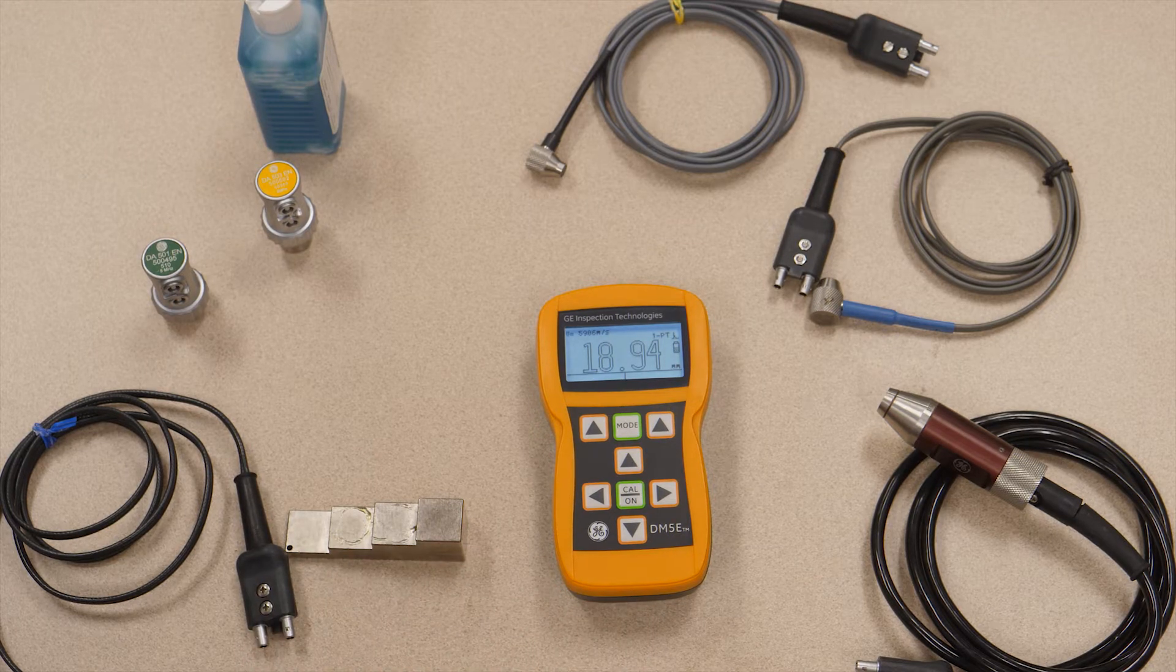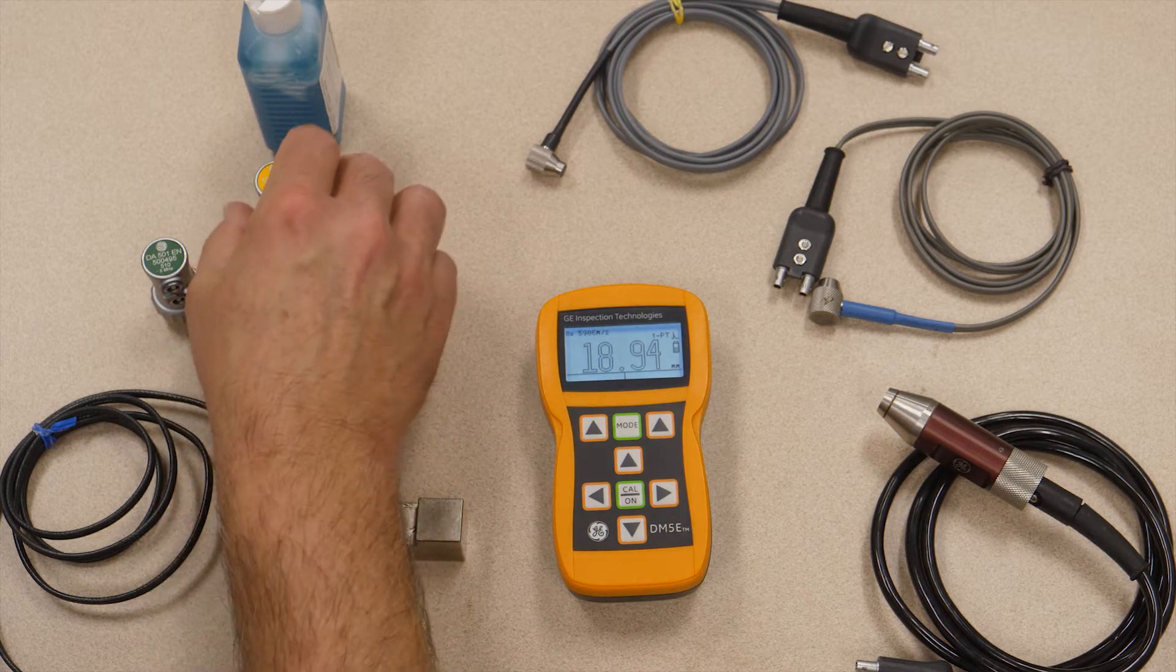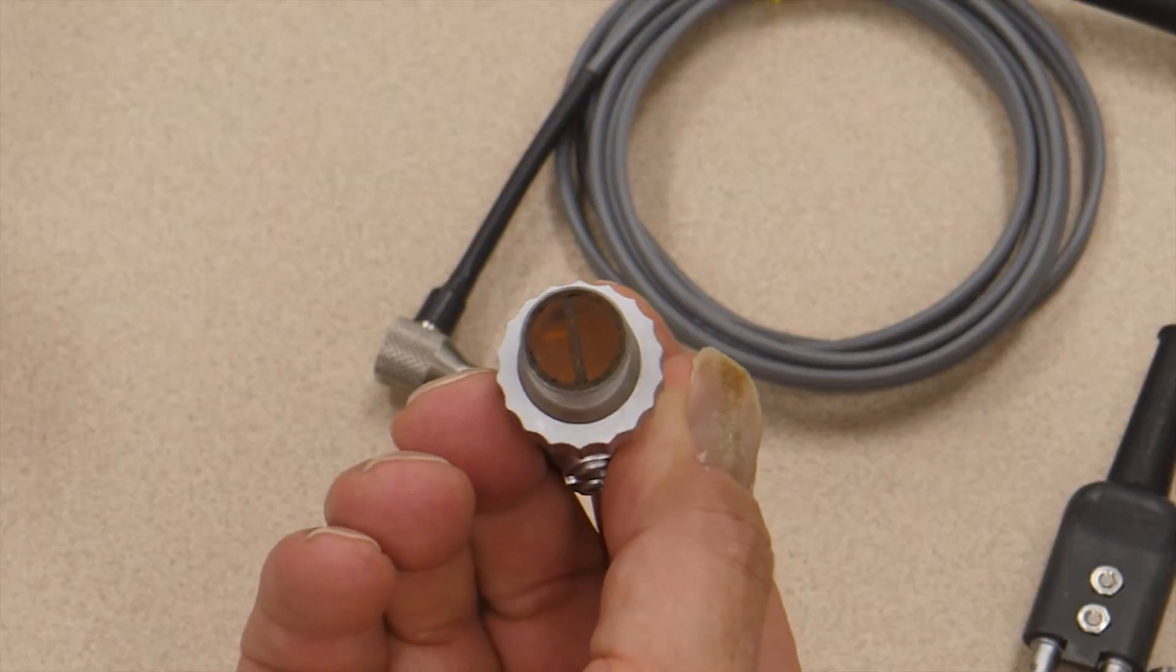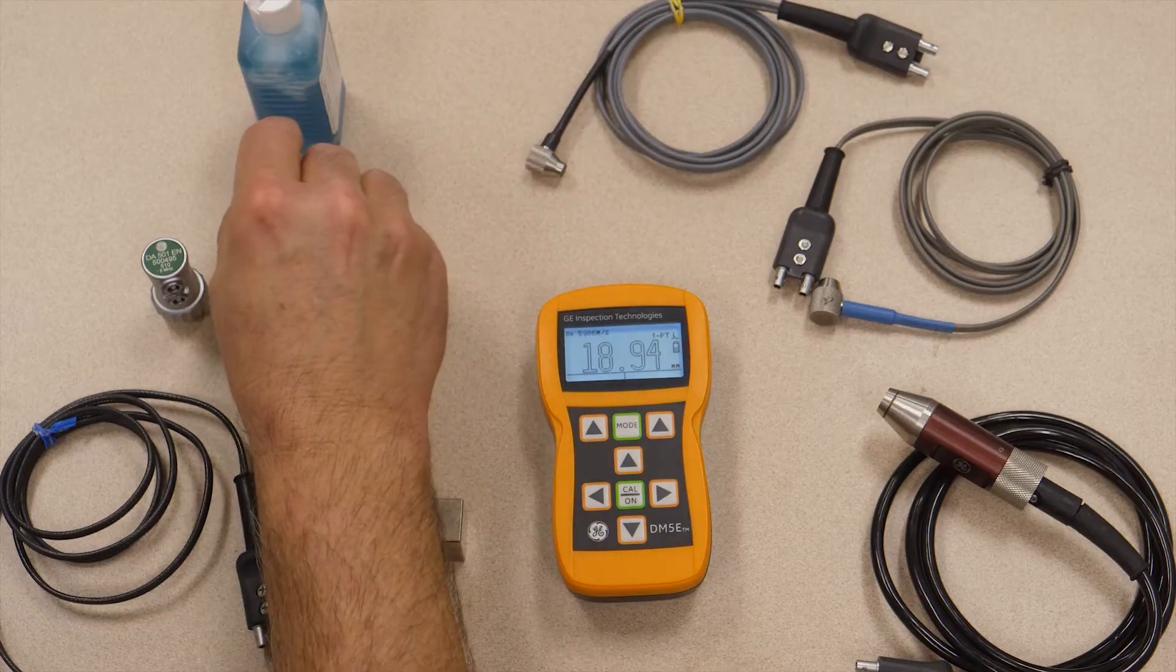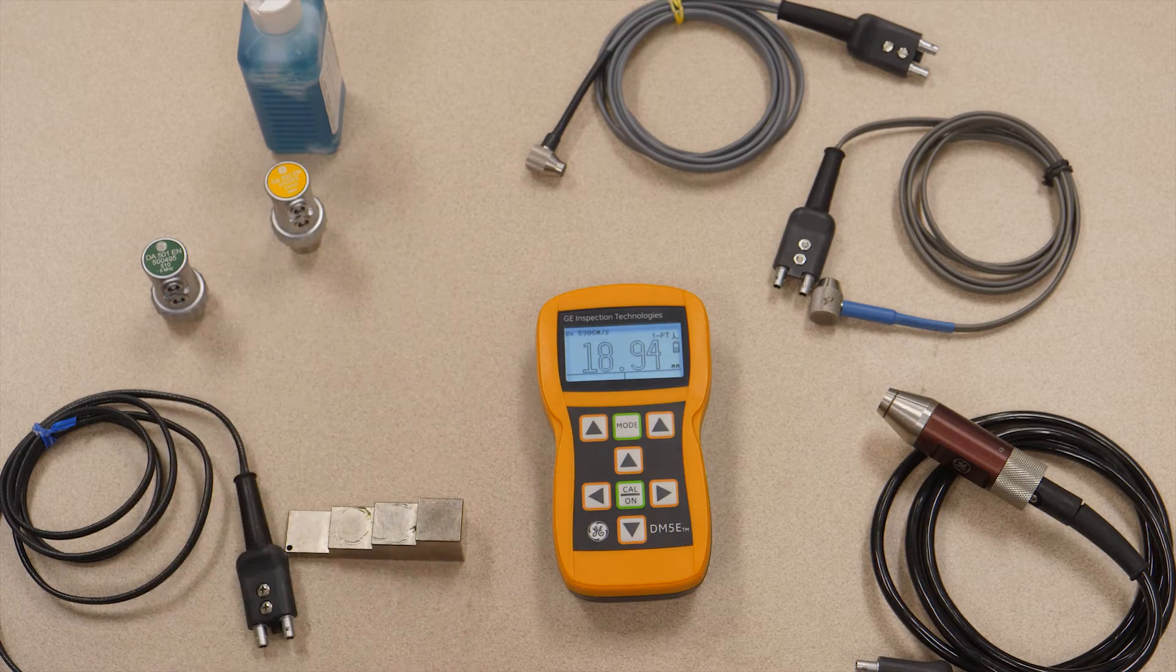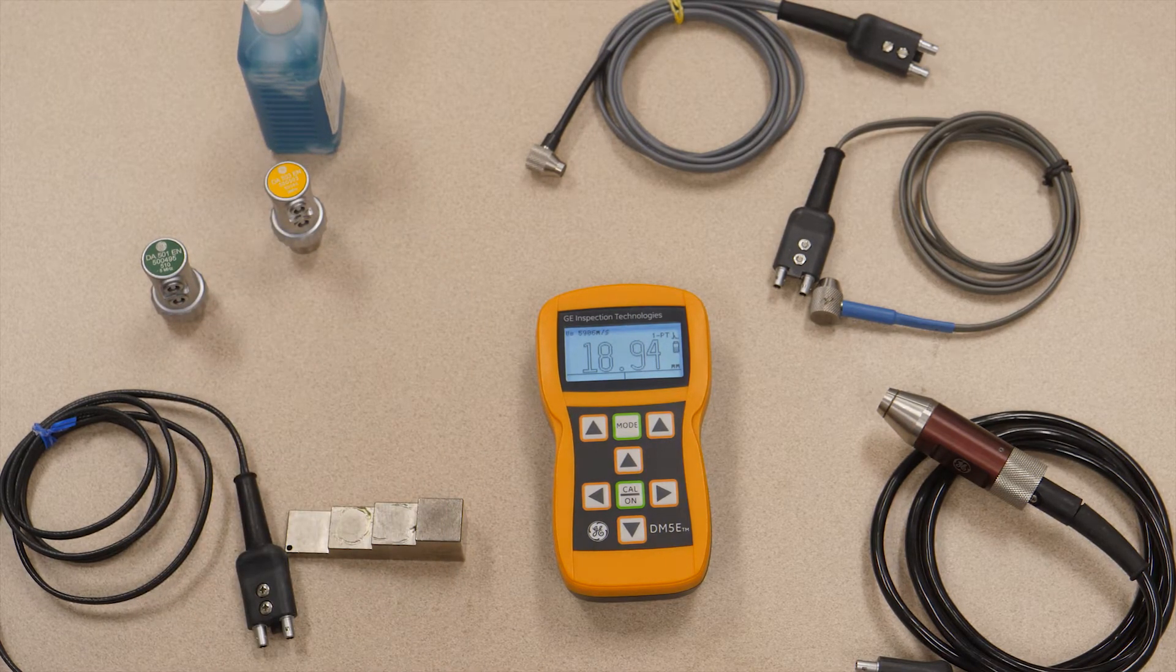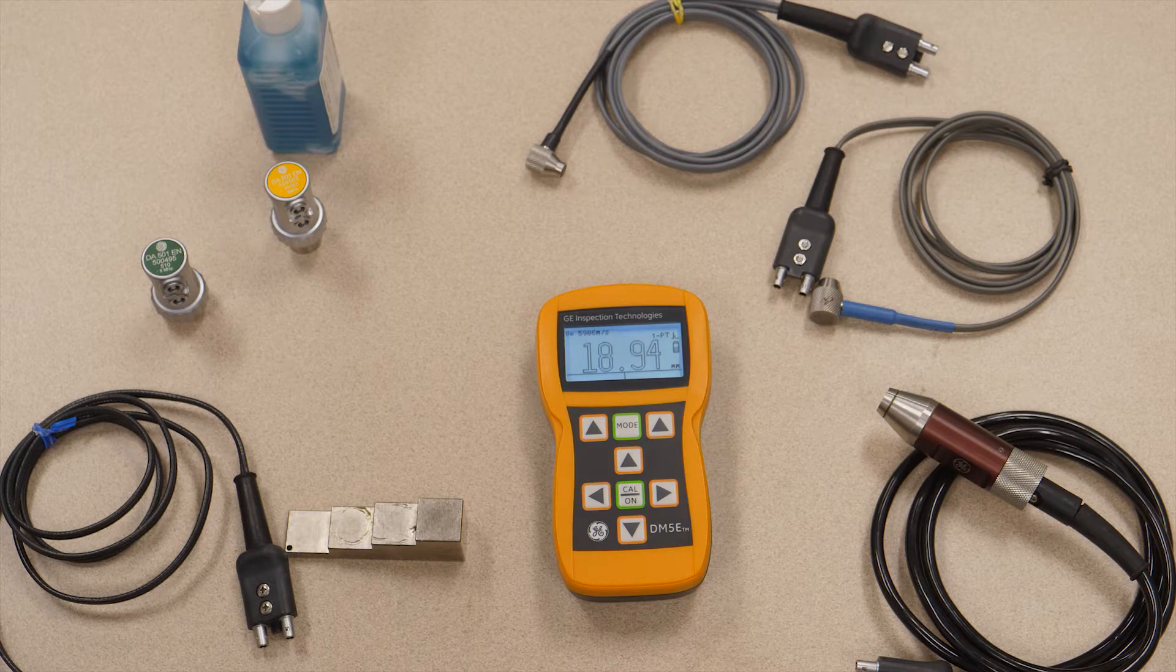This instrument uses only dual element probes. You may be familiar with the dual element probes: pulse on one side, listen on the other, measure the time that it takes the sound to move through the part, and you can turn that into a thickness measurement.